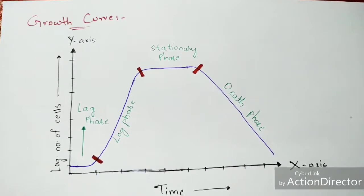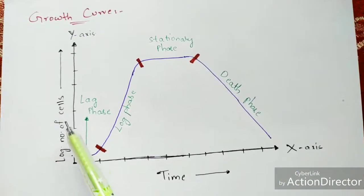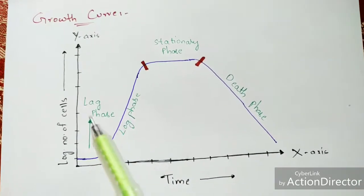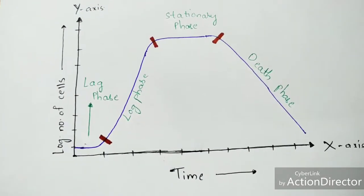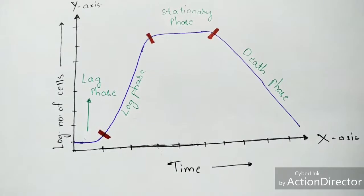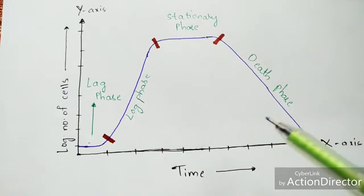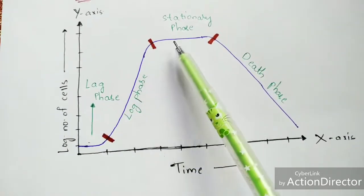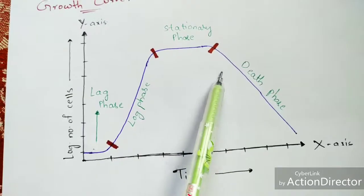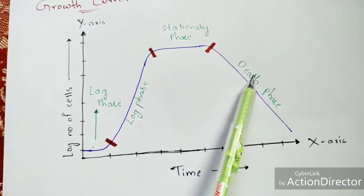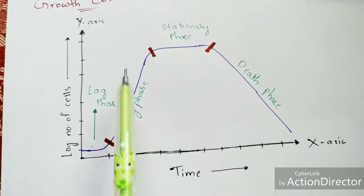The bacterial growth curve is represented as a hyperbola shape. On the x-axis, time is plotted; on the y-axis, the number of cells introduced into the sterilized medium is plotted. In the lag phase, only size increase occurs, so a relatively flat line is drawn. In the log phase, rapid division causes the line to rise steeply. In the stationary phase, the line levels off as a straight horizontal line. In the death phase, the line decreases as cells die rapidly.